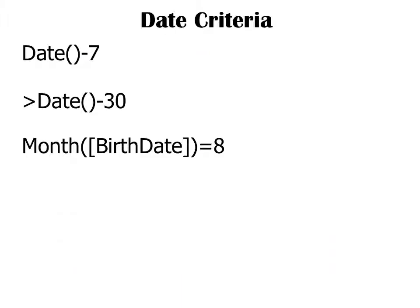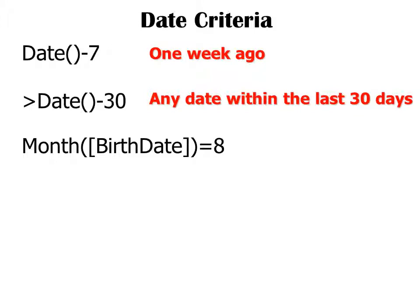Here are some more powerful date criteria. The function Date() means today's date. Date() minus 7 means exactly one week ago, so I could put that in my date criteria to find data from one week ago. If I add the greater-than symbol and change it to 30, it will find any date within the last 30 days — a very popular one that a lot of people use for invoicing.